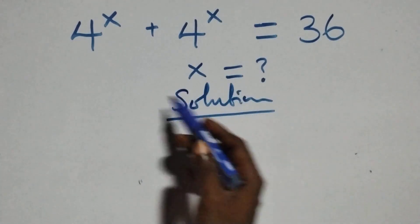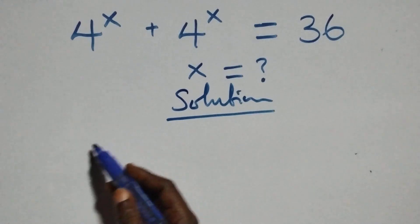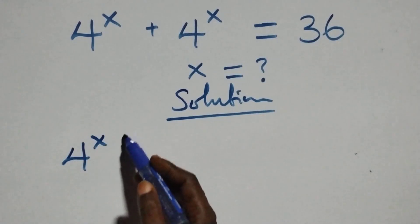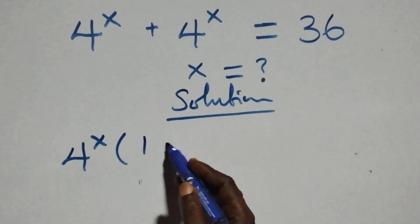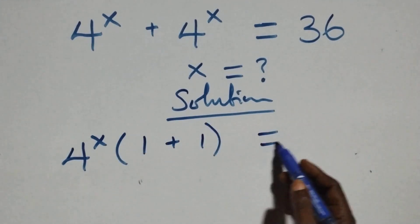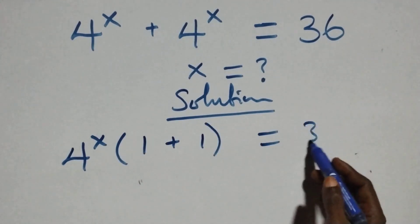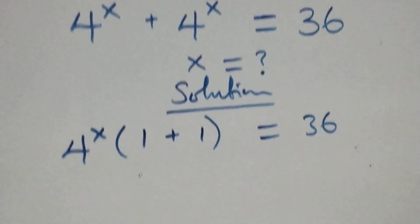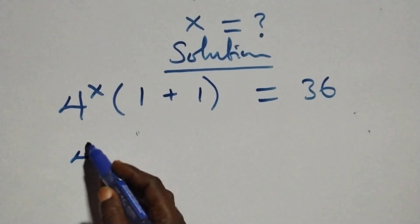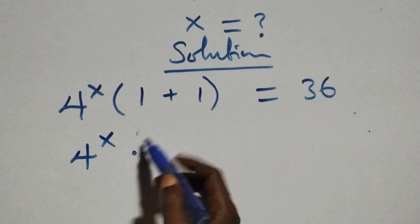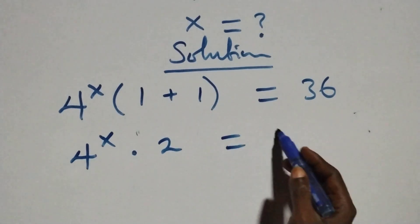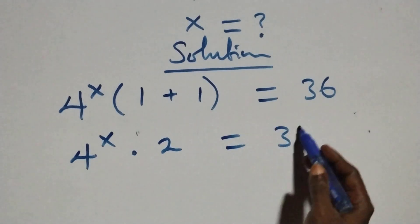From what we have here, we factor 4 raised to power x out, and we have 4 raised to power x into bracket 1 plus 1, left here, equals 36 on this side. This becomes 4 raised to power x times 1 plus 1, that's 2, equals 36.